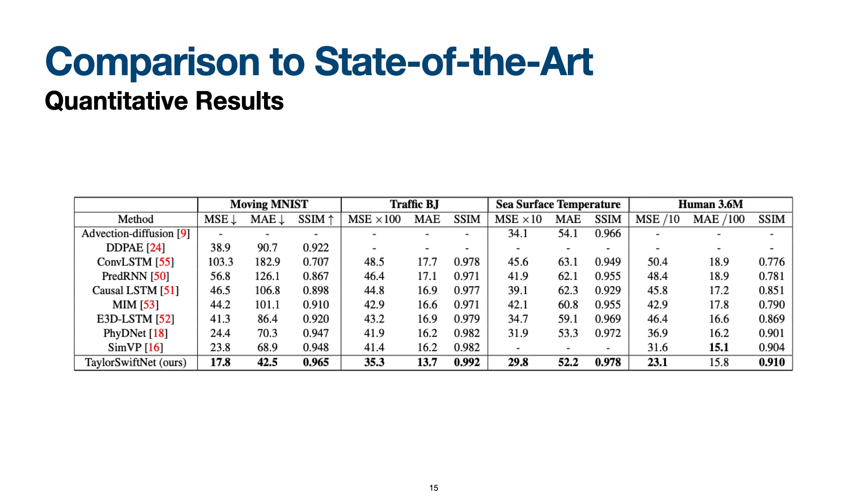We compare our Taylor Swift net with various state-of-the-art methods. As you can see in the table, we evaluated our method on four datasets from very different domains and we were able to outperform on all of them. We use mean square error, mean absolute error, and structural similarity as our main metrics. We average the metrics over all frames of the predicted output sequence.